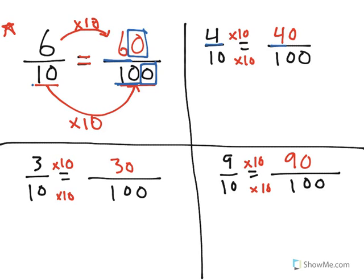4 tenths can be seen right here - we added a zero in the numerator and denominator. That's because whenever you multiply by 10, you're basically just adding a zero to the end of the number.